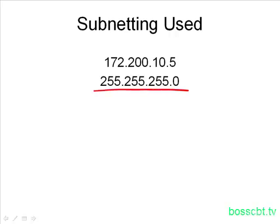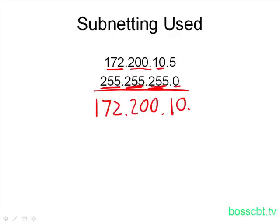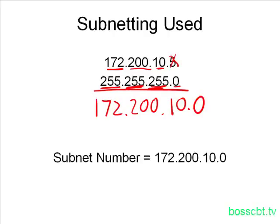We're going to do the same process of comparison, asking the same questions as in the first example. For every octet in the subnet mask that equals 255, we copy the value of the corresponding octet in the IP address. Octet one equals 255, so we copy 172. Octet two equals 255, so we copy 200. The third octet is 255, so we copy 10. The fourth octet is zero, so we ignore the IP address value and write zero. Our subnet number is 172.200.10.0.